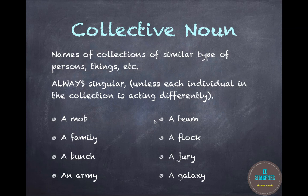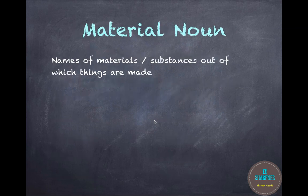All of these nouns are a group of something, yet they are used as singular. Moving on to the next topic, we have material noun — the fifth type of noun.